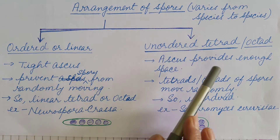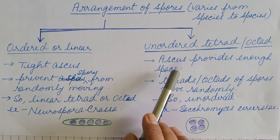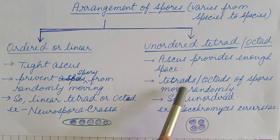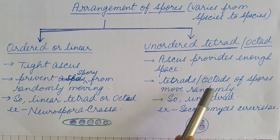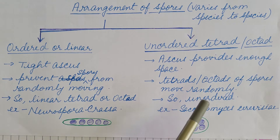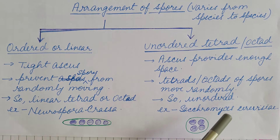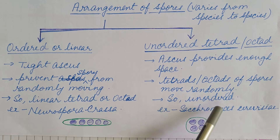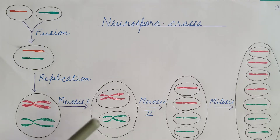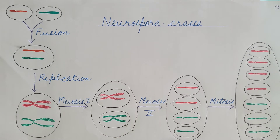In unordered tetrad or octad, the ascus is not tight; it provides enough space, as a result of which the tetrad or octad of spores move randomly and are not linearly or orderly arranged — they are unordered. Example: Saccharomyces cerevisiae. In this video, we will focus on ordered tetrad analysis, specifically the ordered or linear arrangement of spores in Neurospora crassa.